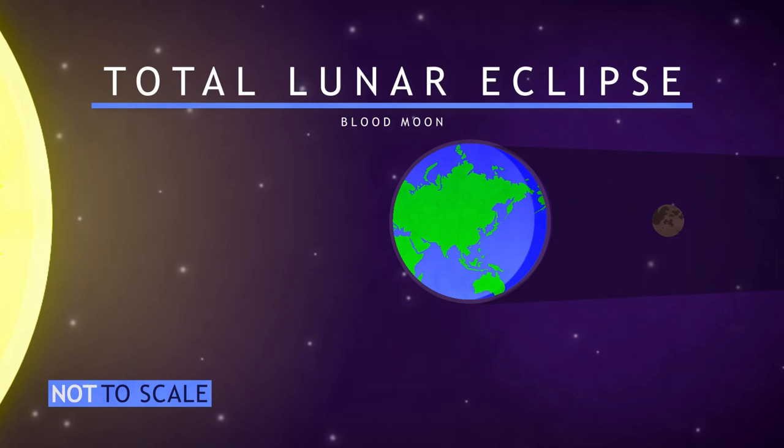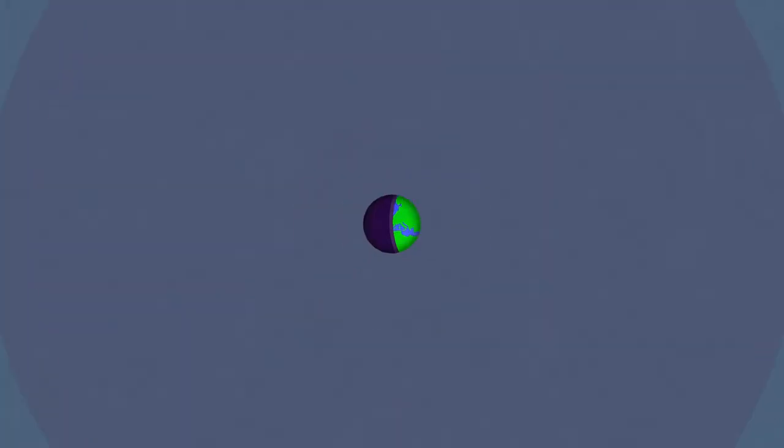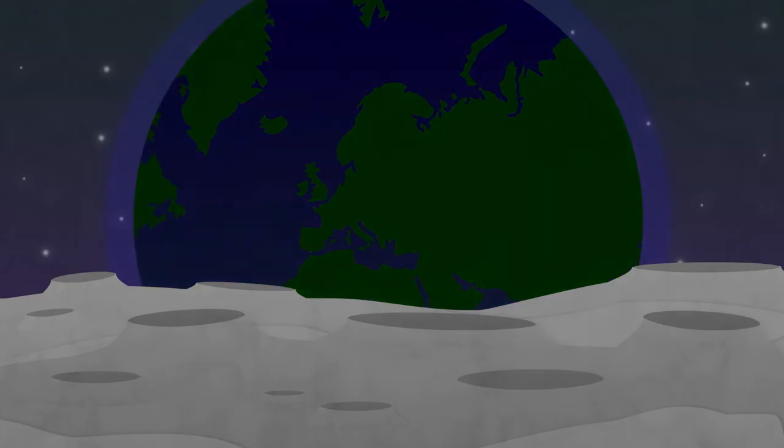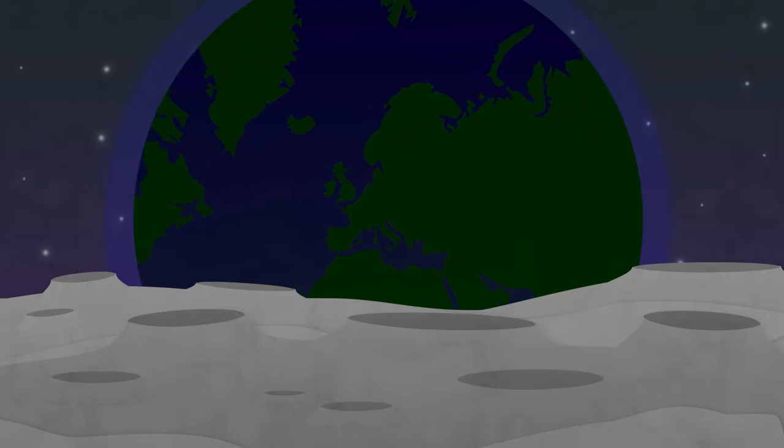To see what's causing the red glow, let's take a look from the moon's perspective. The Earth is blocking any direct sunlight from reaching the moon.